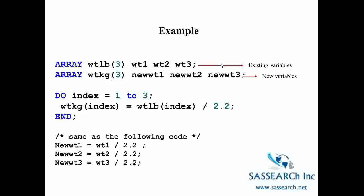So let's take a look at an example. We are first defining an array called weight pound that has three variables, or elements, with weight in pounds. And the variables are called weight one, weight two, and weight three. And these are variables that already exist on our data set.